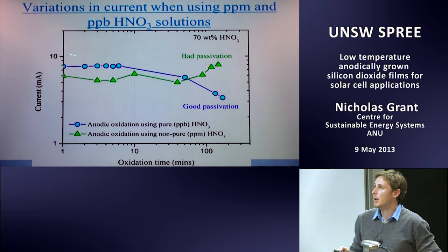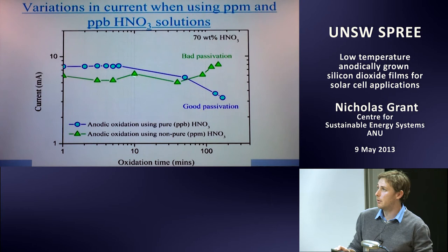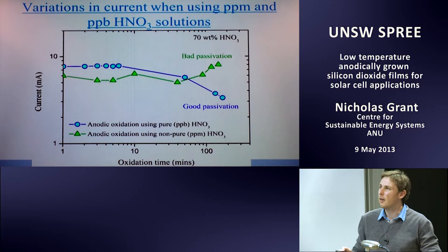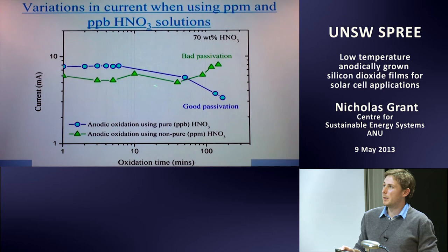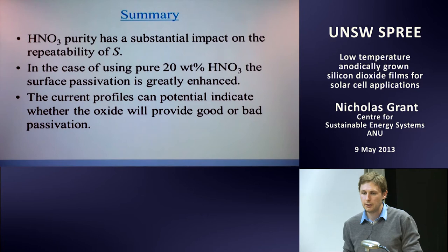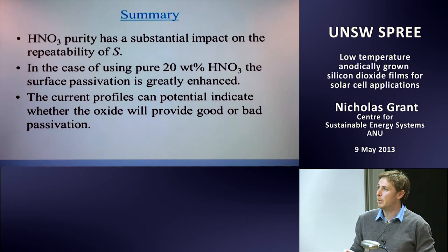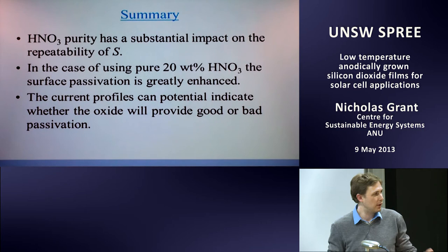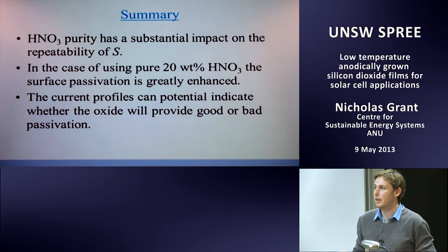Summary: Nitric acid purity has a big impact on surface passivation repeatability. In the case of 20% nitric acid, using pure acid clearly improves passivation considerably. Current profiles can give an indication of whether good or bad passivation is being achieved — if the current starts rising during oxidation with non-pure acid, there's no point continuing.